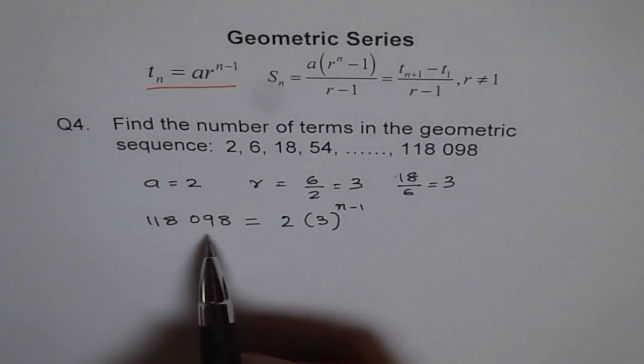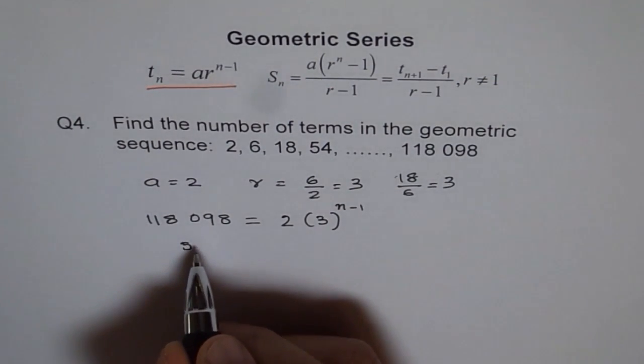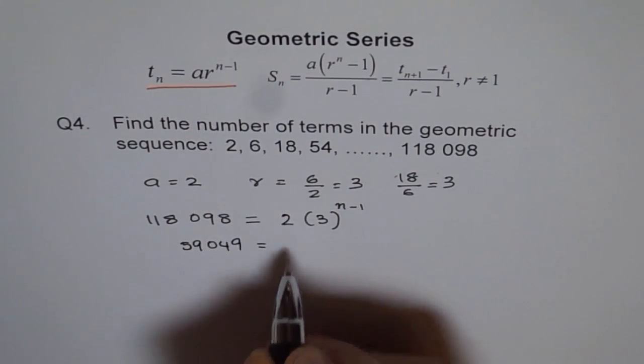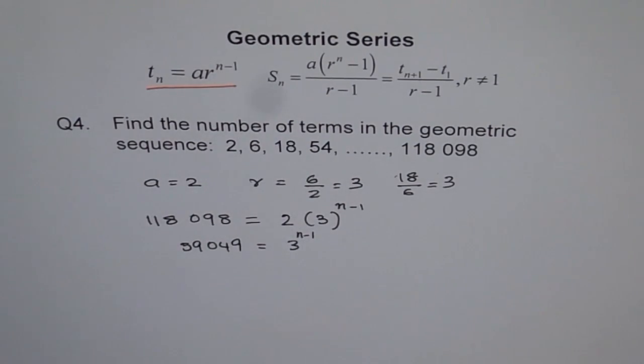Okay, to solve this, we can divide 118,098 by 2. And 098 divided by 2 equals to 59. So we get 59,049 equals to 3 to the power of n minus 1.